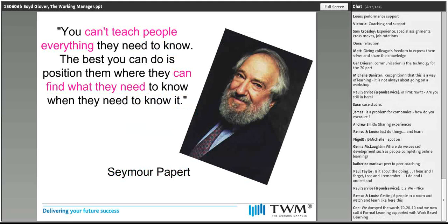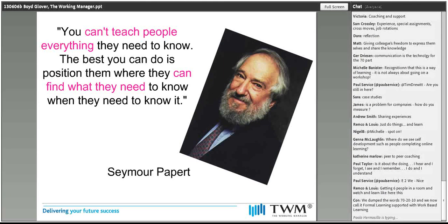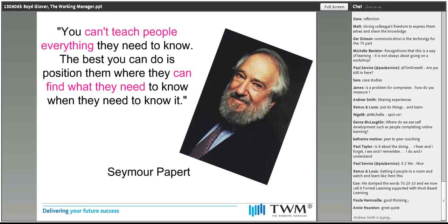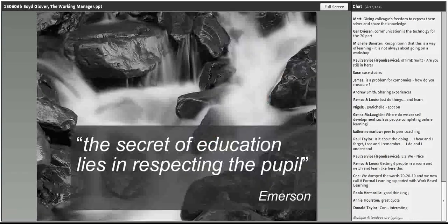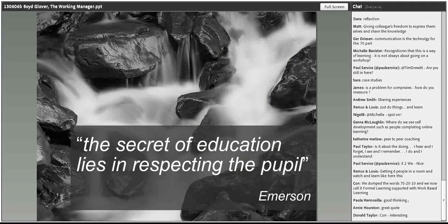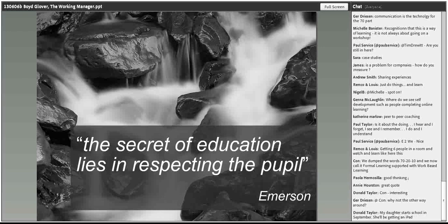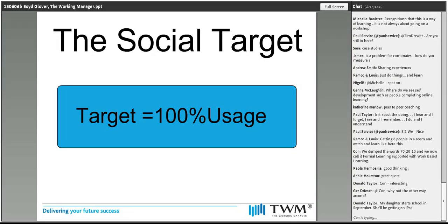Seymour Papert from the US — the guy responsible for taking notebooks into every single school in Maine — was based on the premise that you can't teach people everything. The best you can do is show them what they need when they need to get it and how to get it. And if the secret of education lies in respecting the pupil — a great quote from Emerson — how is social being used to respect the needs of the pupil, or is it just becoming the next big thing to talk about?